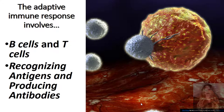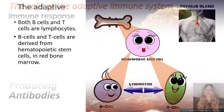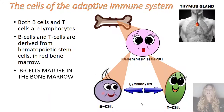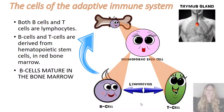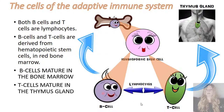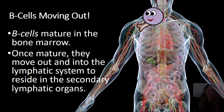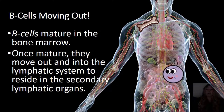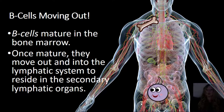The adaptive immune response involves B cells and T cells recognizing antigens and producing antibodies. The B cells and T cells are derived from hematopoietic stem cells in the red bone marrow. B cells are called B cells because they mature in the bone marrow. T cells are called T cells because they mature in the thymus. Once B cells mature in the bone marrow, they will move out into the lymphatic system and reside in the secondary lymphatic organs, awaiting activation.